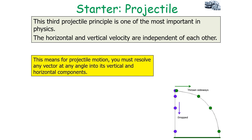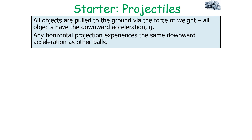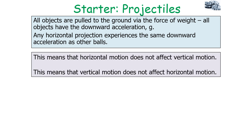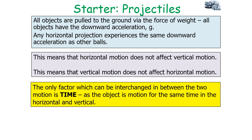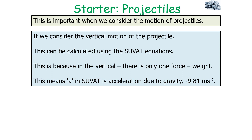For any projectile motion calculation, you must resolve any vector at an angle into its vertical and horizontal components. All objects are pulled to the ground via weight, so all objects have a downward acceleration g. The horizontal motion does not affect the vertical motion and vice versa. The only factor which can be interchanged between the horizontal and vertical motion equations is time, because the object is in motion for the same duration in both directions.